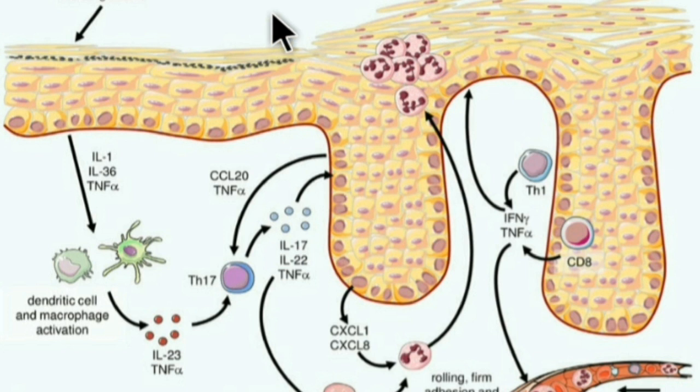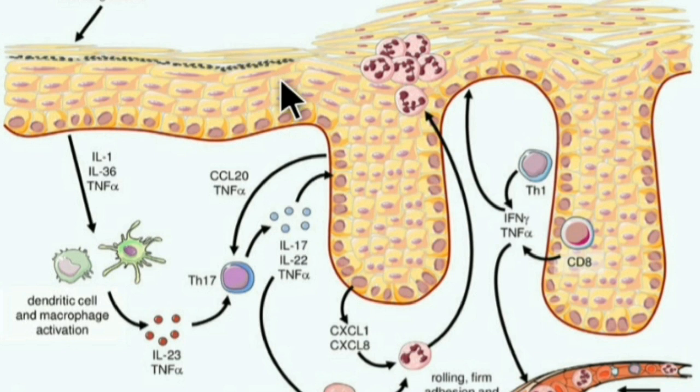Interleukin-6 is increased in psoriasis, which suppresses the T regulatory cells, leading to the unopposed activity of pathogenic T cells.